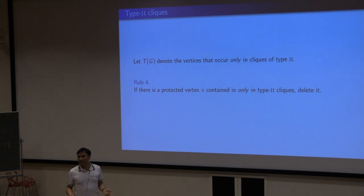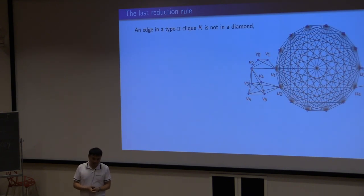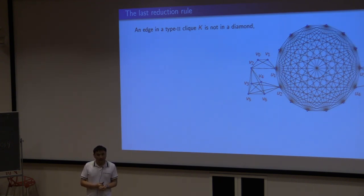It turns out it's harder to bound the good cliques, because they are innocent. The idea is, again, we try to connect them with the small bad cliques. Let T denote all those vertices only appearing in the good cliques. If there is a protected vertex in TG, then just delete it. The last rule is a little bit informal, because this is really technical.